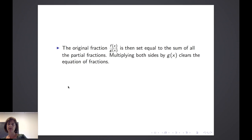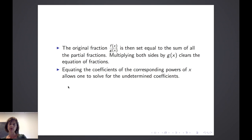Once we have identified the partial fractions, we will set the original fraction f(x)/g(x) equal to the sum of the partial fractions. Then we'll multiply both sides by g(x) in order to clear the equation of fractions. We'll distribute the constants across the different terms and identify and collect the powers of x — all the first powers, all the second powers, and so on — and equate the coefficients from the two sides to determine what those coefficients should be.